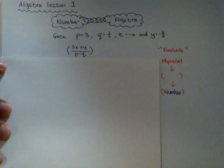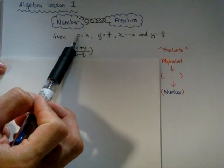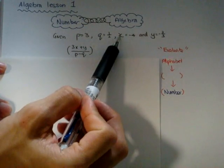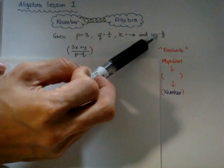Let's assume that given these four information: P equal to 3, Q equal to half, X equal to negative 4, and Y equal to negative 2 thirds.